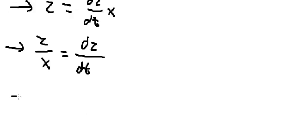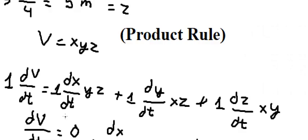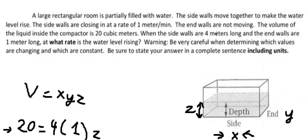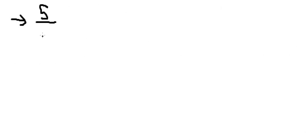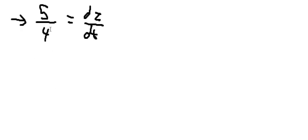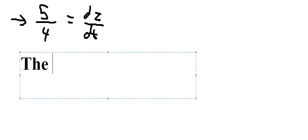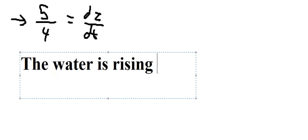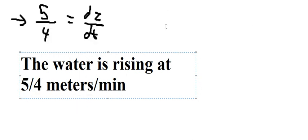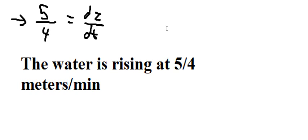We substitute z equals 5 and x equals 4 into the equation. The result is positive, so we can conclude that the water level is rising at 5 over 4 meters per minute. This is the end — thank you for watching.